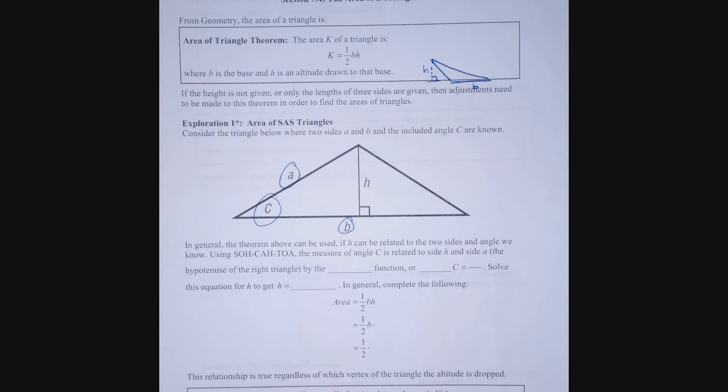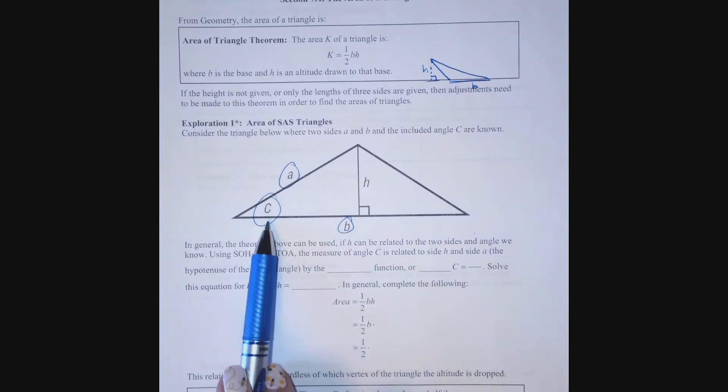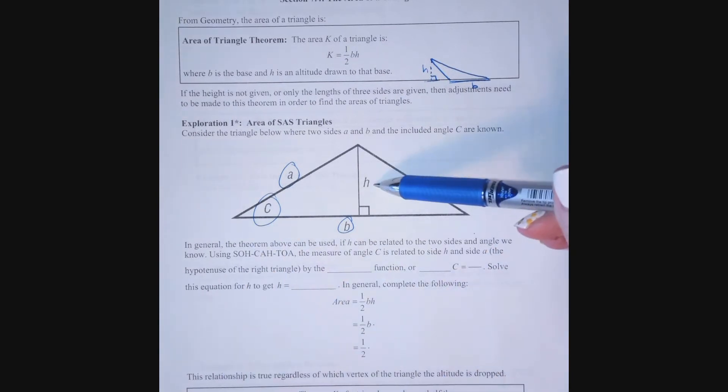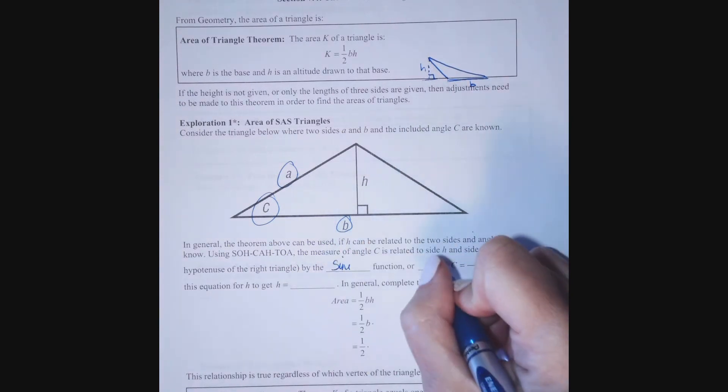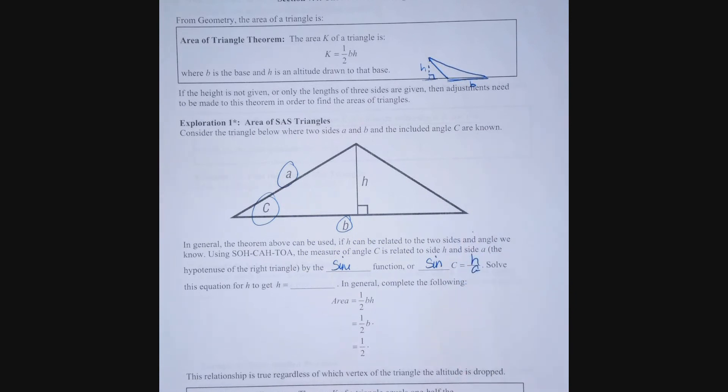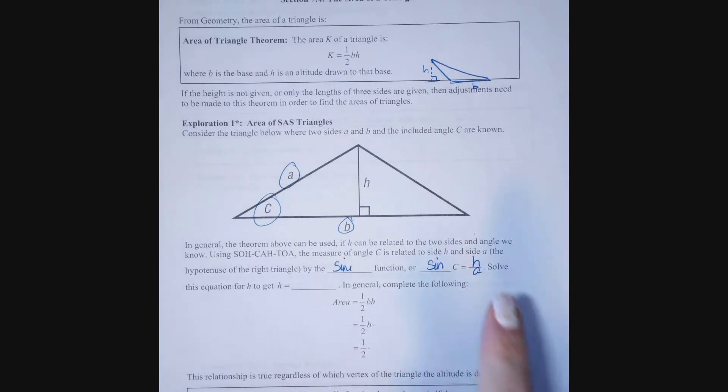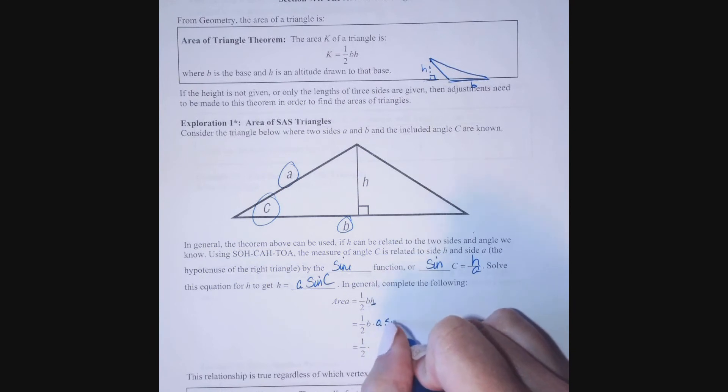In general, the theorem can be used if H can be related to the two sides and the angle we know. If I use that SOHCAHTOA mnemonic, I know that the measure of angle C is related to side H and side A by the sine function. Or I can say that sine of C is equal to H over A. When I solve this equation for H, I get that H is equal to A times the sine of C. In general, this tells me that where I have one-half base times height, I can replace height with A sine C.